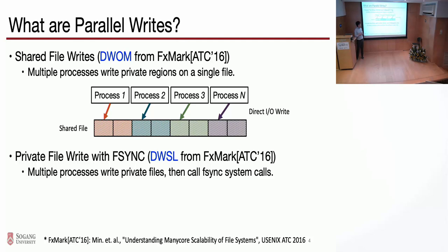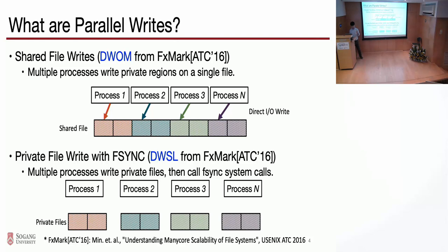The second scenario is private file write followed by F-sync. We also borrowed the DWSL workload from FXMark. In this scenario, multiple processes write to private files, then call the F-sync system call to persist the data. So when there are N processes, they are writing to private files and then issue the F-sync system call.